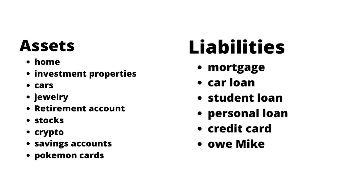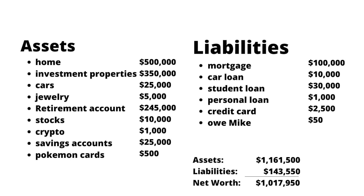And on the liability side, think of things such as mortgages, car loans, student loans, personal loans, credit cards, or even if you owe friends and family money. Once you've made the list, put a value next to each of these. If you're in the United States, what's the value of your house on Zillow? What's your car's worth on eBay if you were to sell it? The latest portfolio value in your stocks or retirement accounts — find a best estimate of what the value would be. On the liability side, check the latest balance on your statements and record these down.